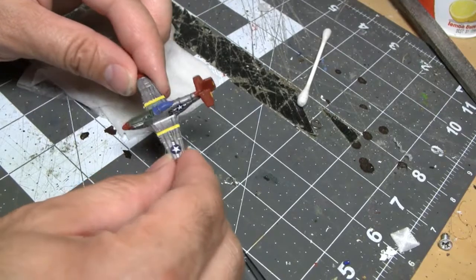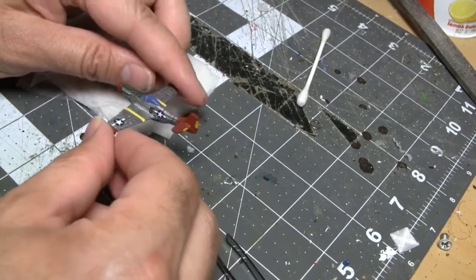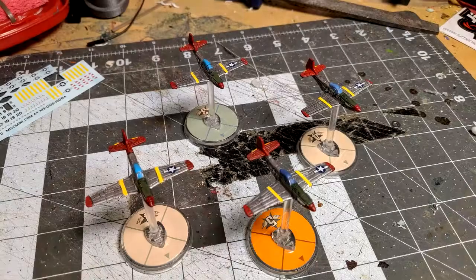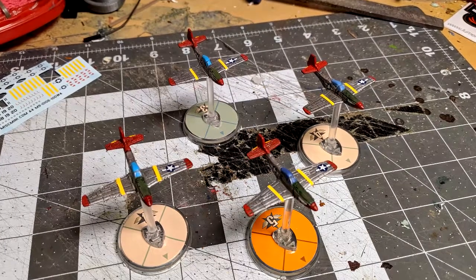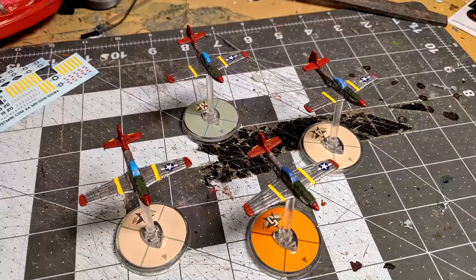With the decals applied, your 332nd fighter group Mustang is ready for combat. So thank you guys all for watching this painted tutorial of Blood Red Skies. Once again, I'm Jason, the creator of the tabletop battlefield.